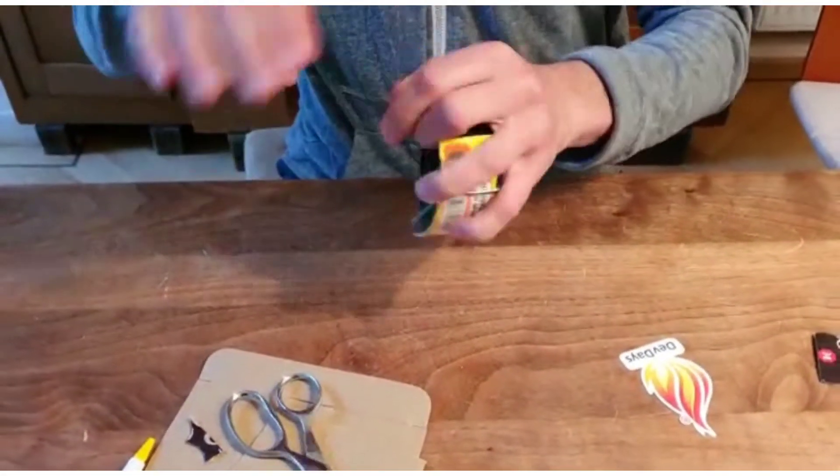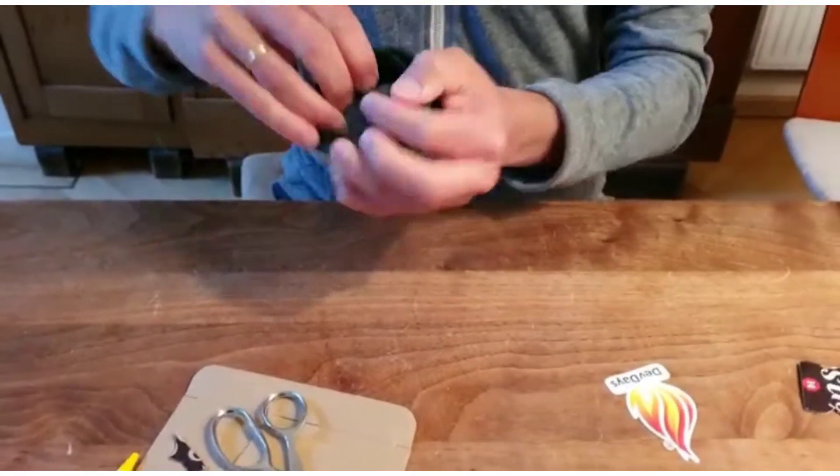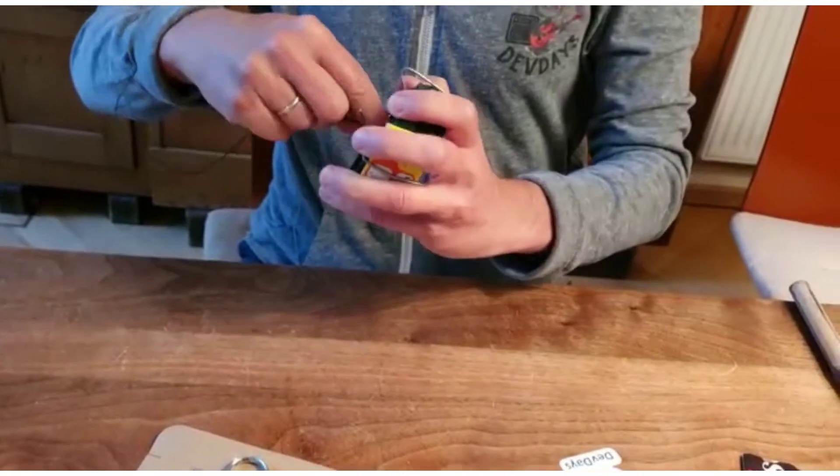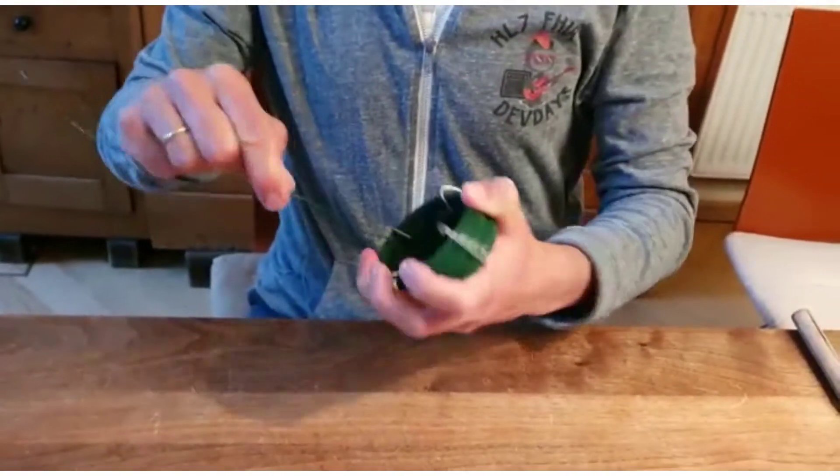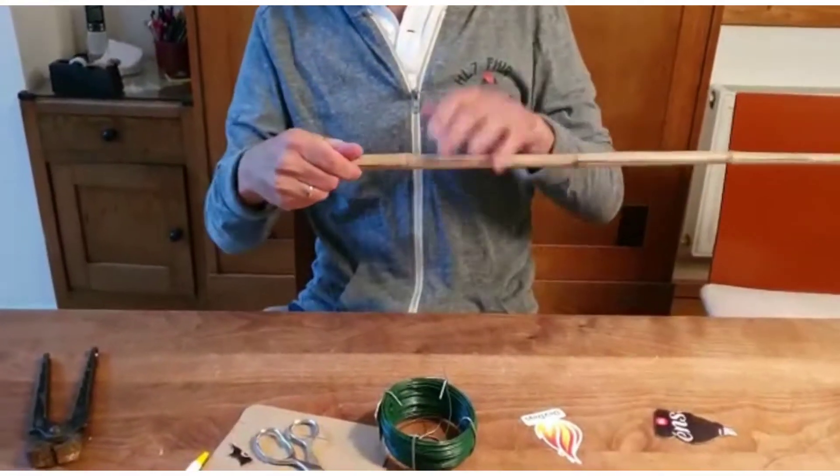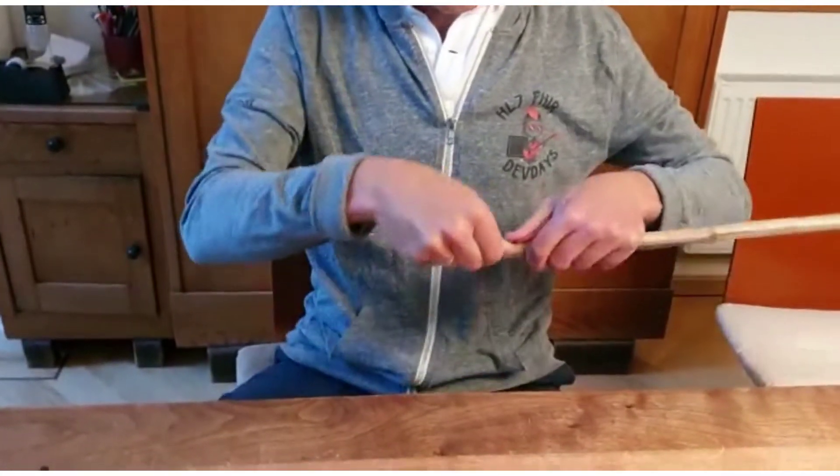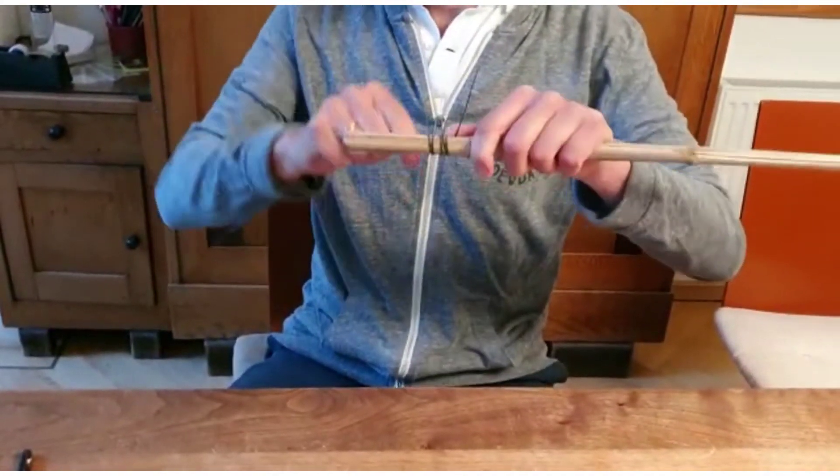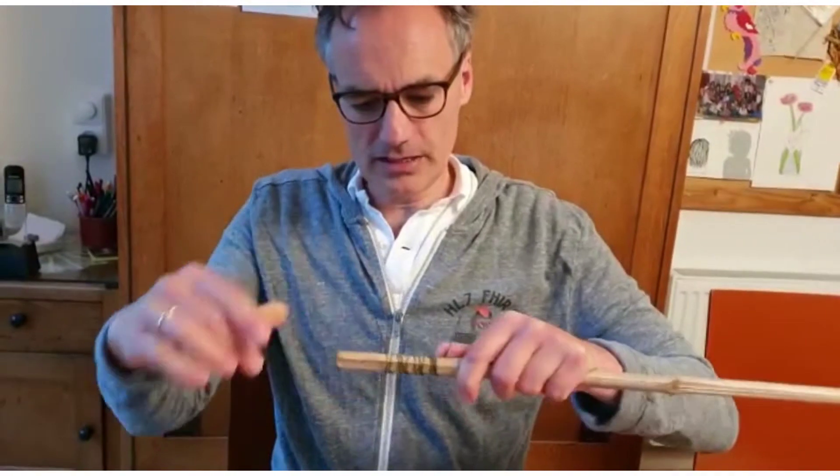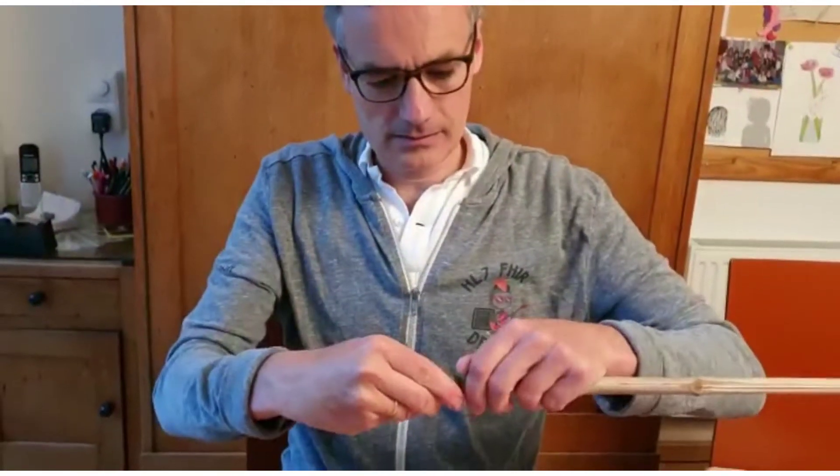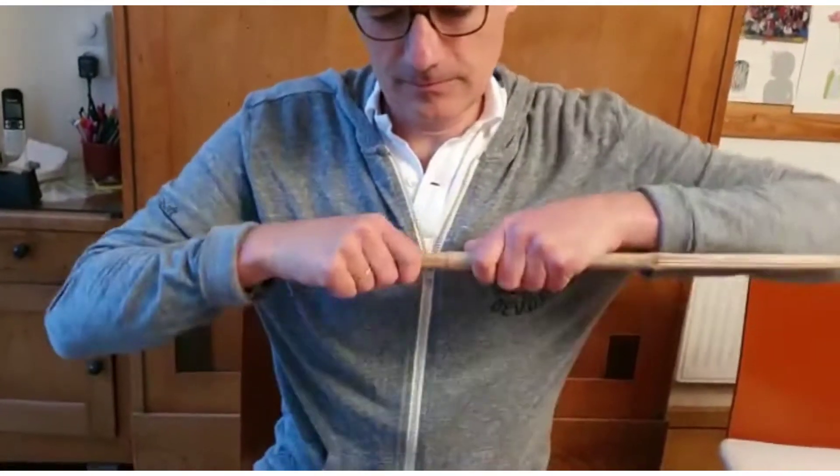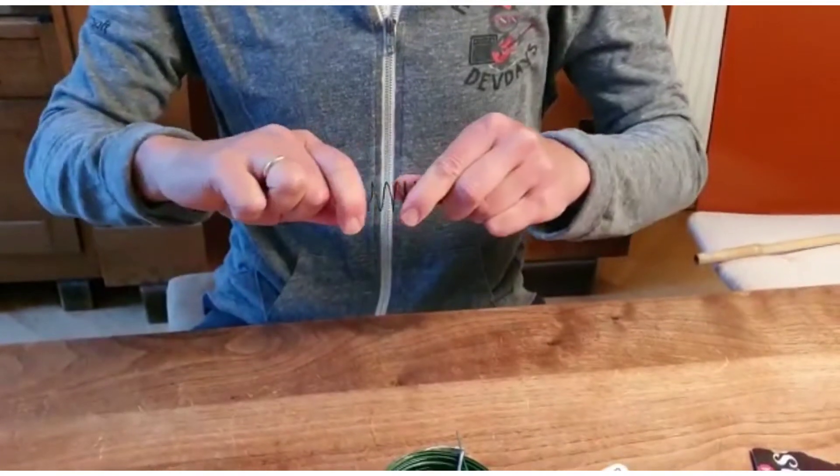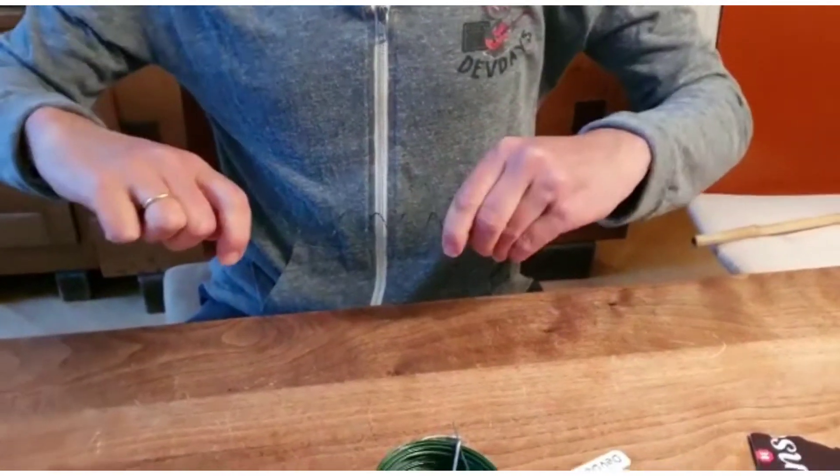Now we're going to take the steel wire, cut off, well, let's say the length of an arm, take the stick, swirl the steel wire, leave a piece at both ends, take it off, pull it apart a little bit, not too much, of course.